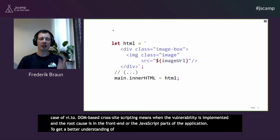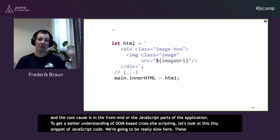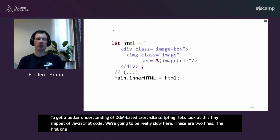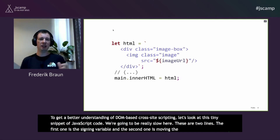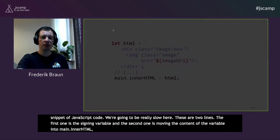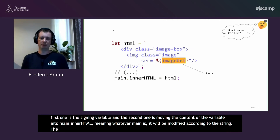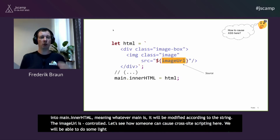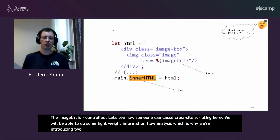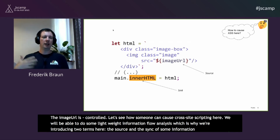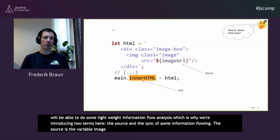Let's look at this tiny snippet of JavaScript code — just two lines. The first assigns a variable, and the second moves the content of that variable into main.innerHTML, meaning the HTML will be modified according to the string. Assuming imageURI is attacker-controlled, let's think about how someone could cause cross-site scripting here. We'll do some lightweight information flow analysis, introducing two terms: the source and the sink. The source is the variable imageURL, and the sink is main.innerHTML, where attacker-supplied information is actually inserted into the DOM.